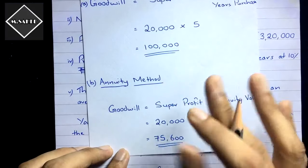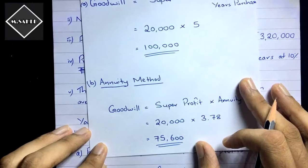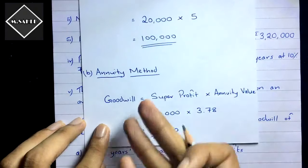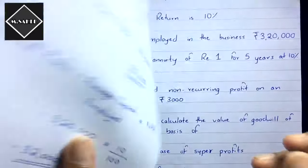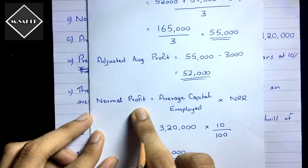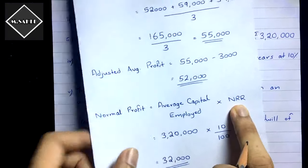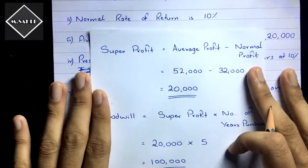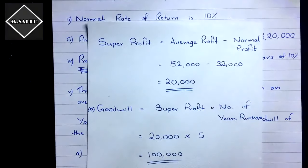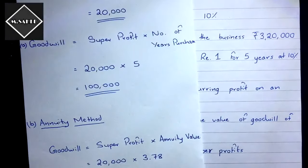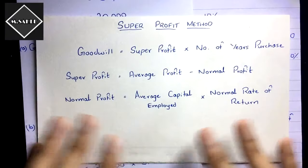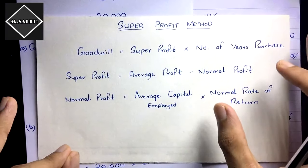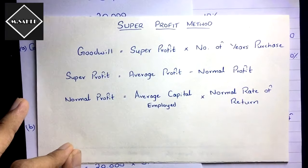So in this video we covered the super profit method and the annuity method. The key new concept was normal profit: Average Capital Employed × Normal Rate of Return. Super profit is the excess profit over normal profit. Goodwill = Super Profit × Years Purchase, or Super Profit × Annuity Value. In the next video we will see the capitalization method.